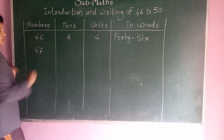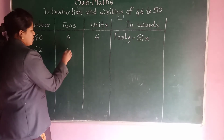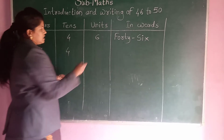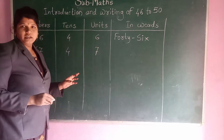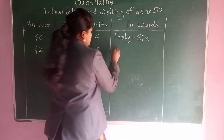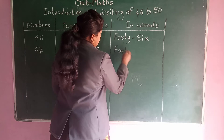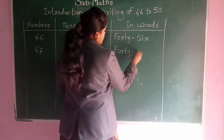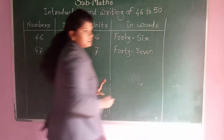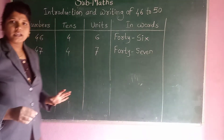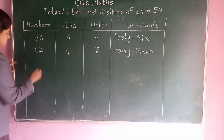Next, 47. This number's tens and units — 4 is the tens and 7 is the unit. And how to write in words: 47 is FORTY SEVEN — F, O, R, T, Y, S, E, V, E, N.